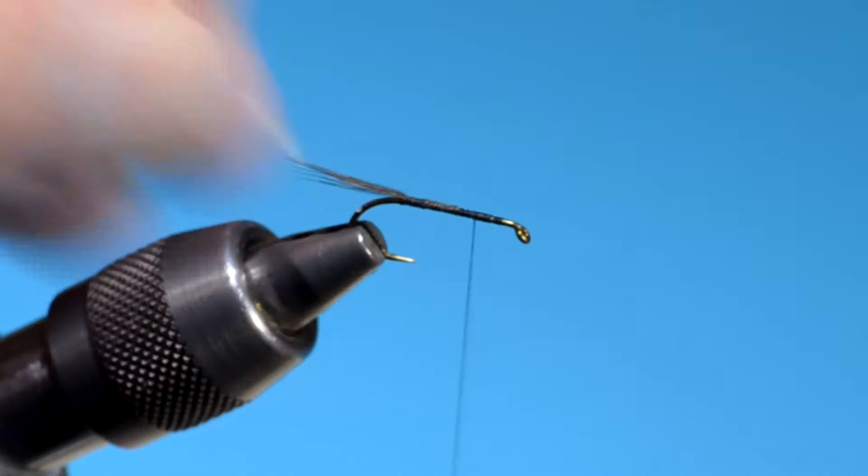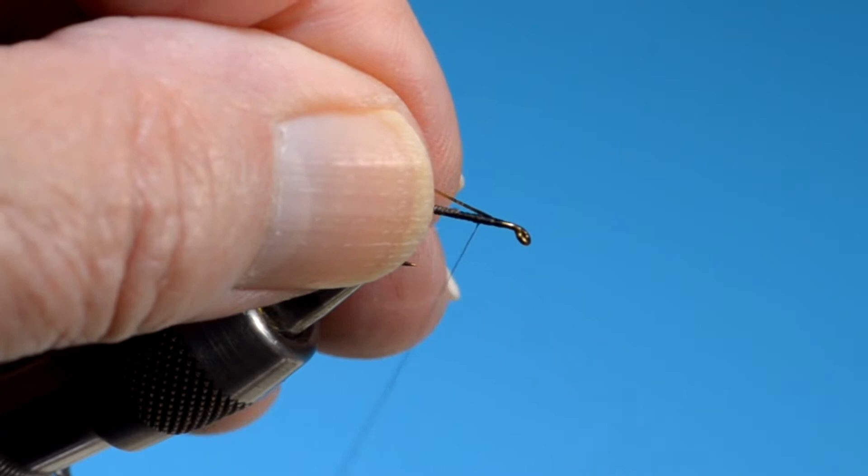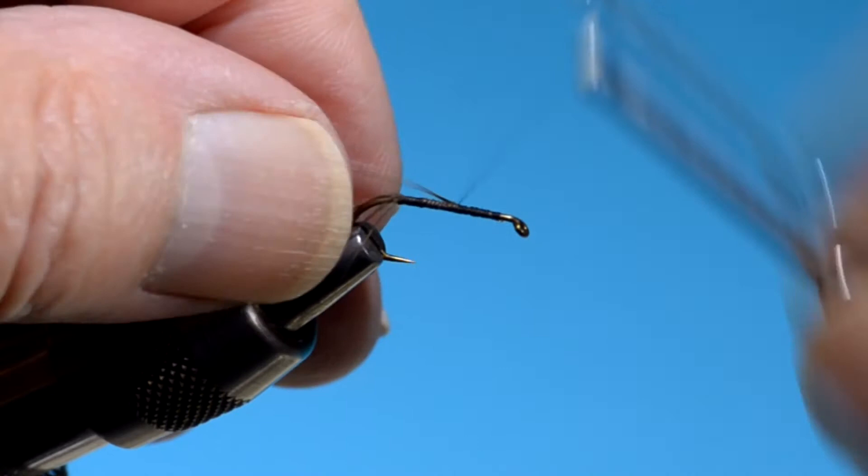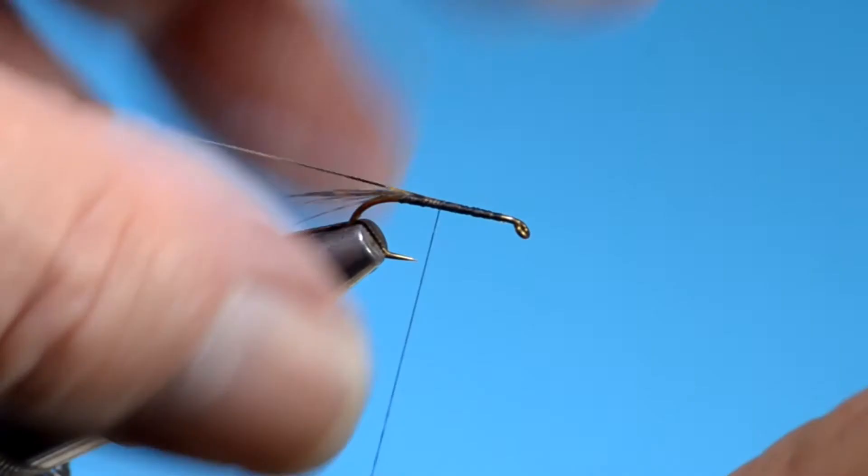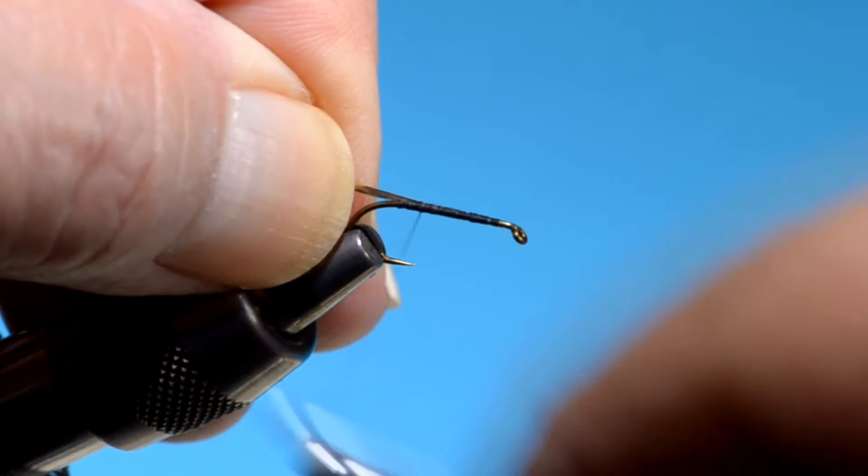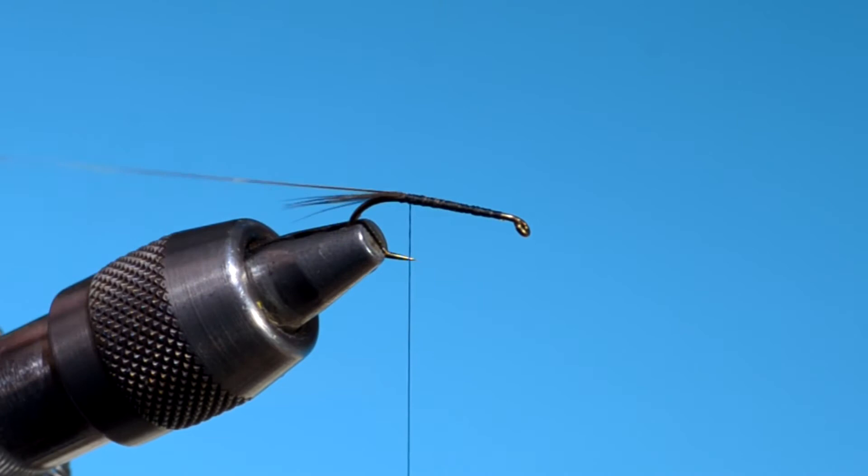I'm going to tie in the tinsel gold side against the shank. And as I wind back, I make sure—this is mylar, extra small—I make sure that I've still got the gold side against the shank. It's very easy to get it flipped, and now you've got silver. And this is a gold-ribbed hare's ear, after all, so we've got to keep it gold.